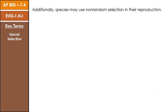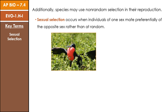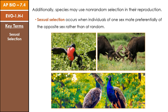Finally, the last mechanism that can change allele frequency in a population is non-random mating. We can refer to this as sexual selection, where individuals of one sex mate preferentially with the opposite sex rather than at random — so they're choosing their mates. We can see this in the innate courtship rituals of some organisms, intraspecies competition for mates, and one of the most well-known examples of sexual selection is that of male peacocks with their elegant back feathers.